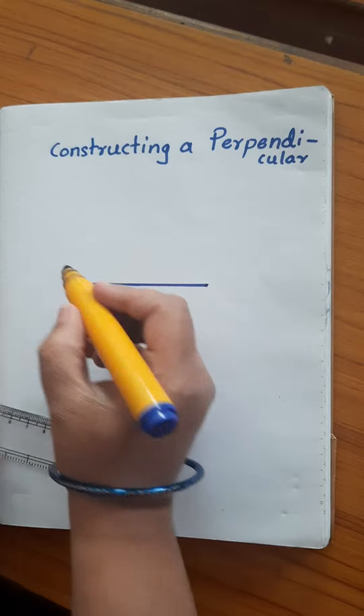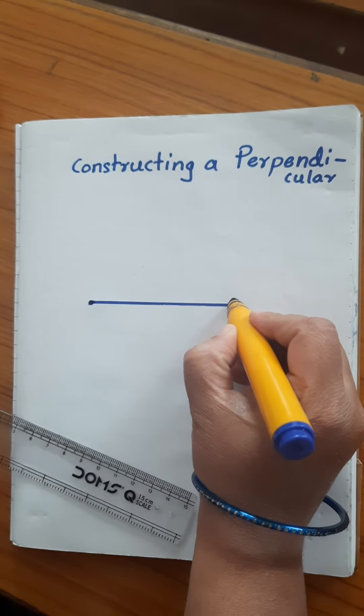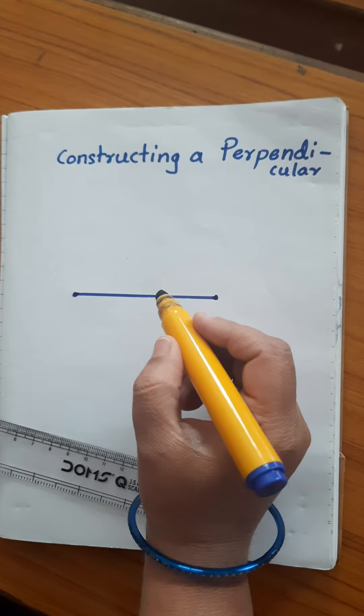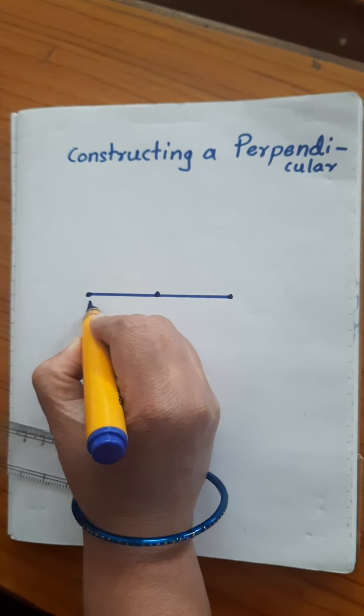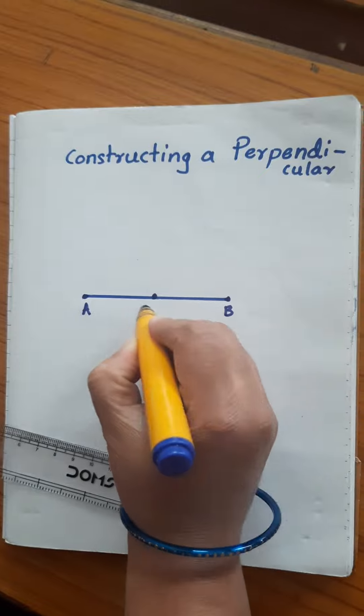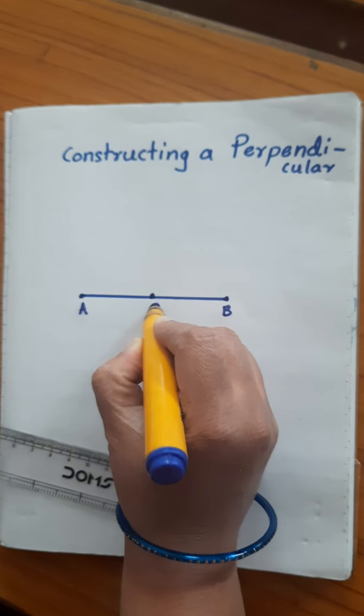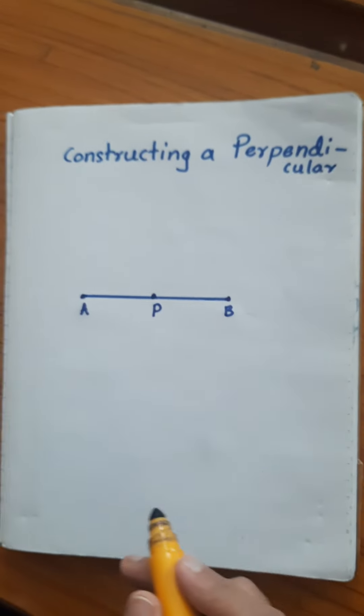Now I am going to draw a line segment, drawing a point somewhere in the middle. And I will name this as AB and the point on the line P. At this point I have to draw a perpendicular.